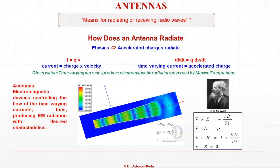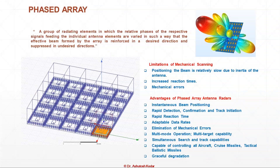What is a phased array? A phased array is a group of radiating elements in which the relative phases of the respective signals feeding the individual elements are varied in such a way that the effective beam formed by the array is reinforced in a certain direction. We have a group of phased arrays and between two elements there is a progressive phase shift being given to steer the element beam in a particular direction.